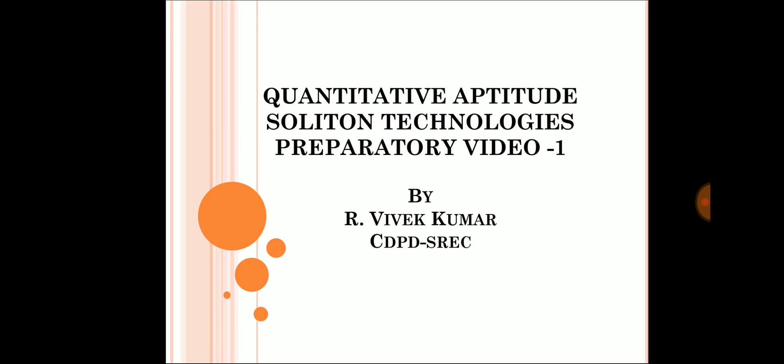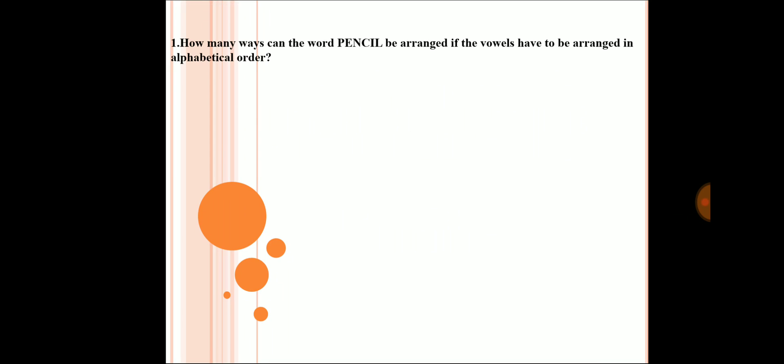The very first question is: how many ways can the word PENCIL be arranged if the vowels have to be arranged in alphabetical order? The vowels in this word are E and I. Since it's a six-letter word we may not be very confident about solving this question directly.